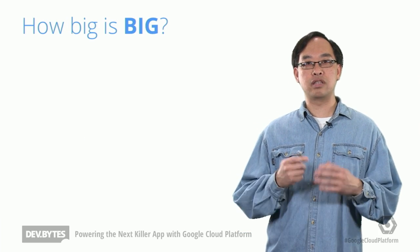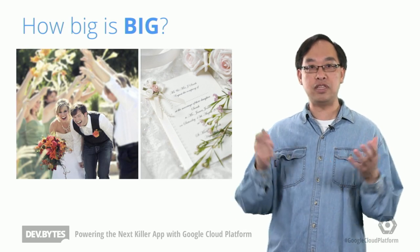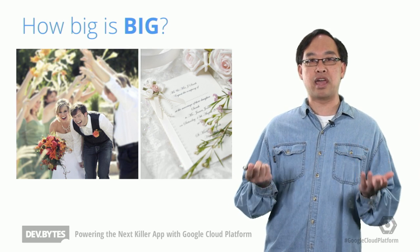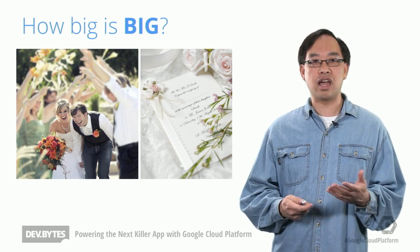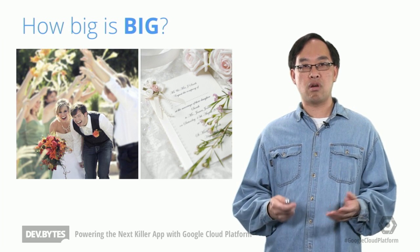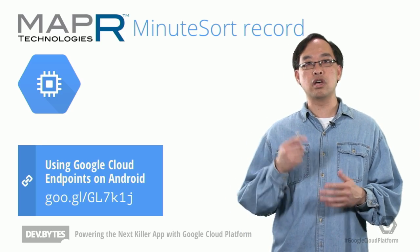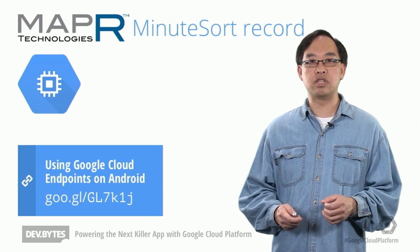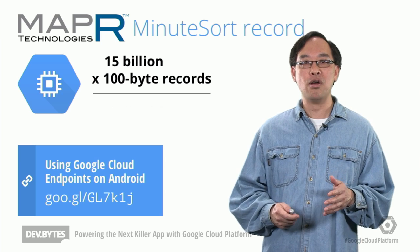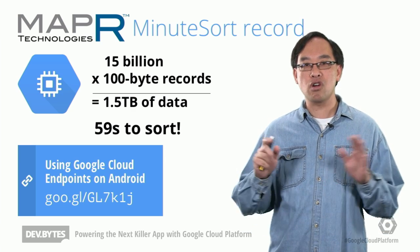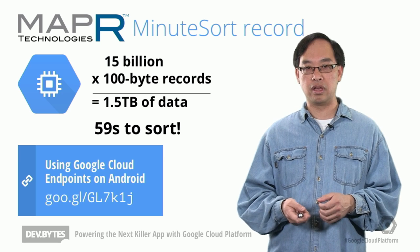How big can you go? Here's an example of really big data. Let's say you were going to get married and needed to prepare invitations for your closest 15 billion friends and relatives — roughly seven billion guests from Earth and the other eight from other planets. Organizing addresses of roughly 100 bytes each for envelopes and sorting all that data to remove duplicates — the MapArt team did something similar last year using Hadoop on Compute Engine to set the minute sort record. Their app was able to take 15 billion 100-byte records — meaning 1.5 terabytes or 1,500 gigs of data — and sort it all in less than a minute, consistently across multiple runs and different cluster configurations. Click the link for more details.